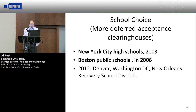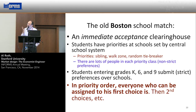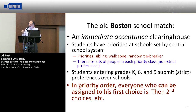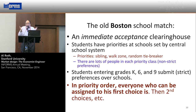Some procedures for doing that had the property that it wasn't safe for families to tell the school system where they wanted their kids to go to school. This is a game theoretic problem — the information we need to assign kids to schools is decentralized; families have it. We're going to ask them to tell us where they'd like their kids to go. Sensibly enough, they're going to think: how are you going to use what I tell you? Will telling you the truth help me, or could I do better some other way?